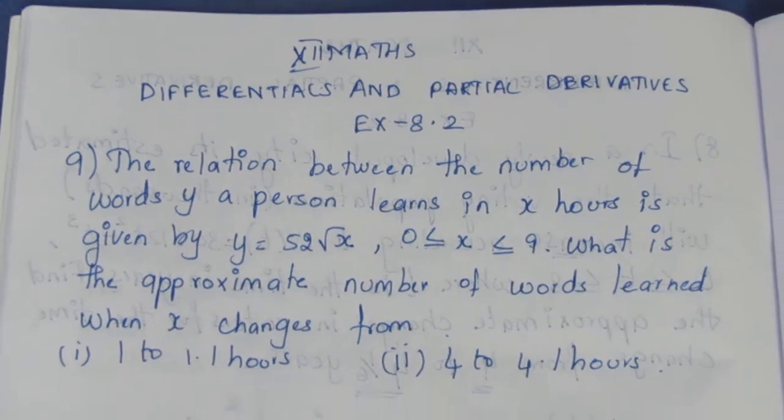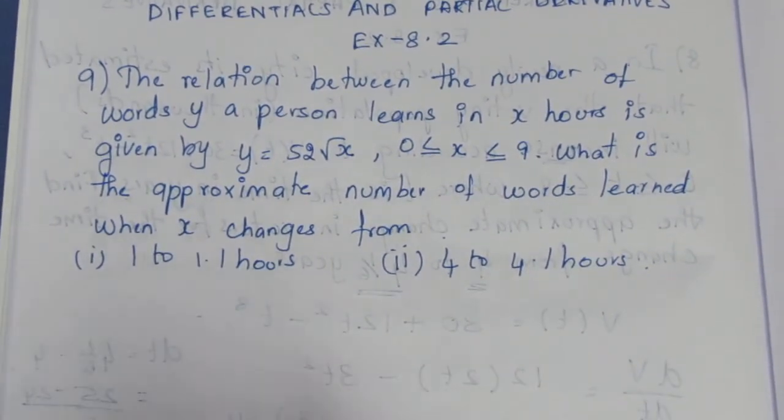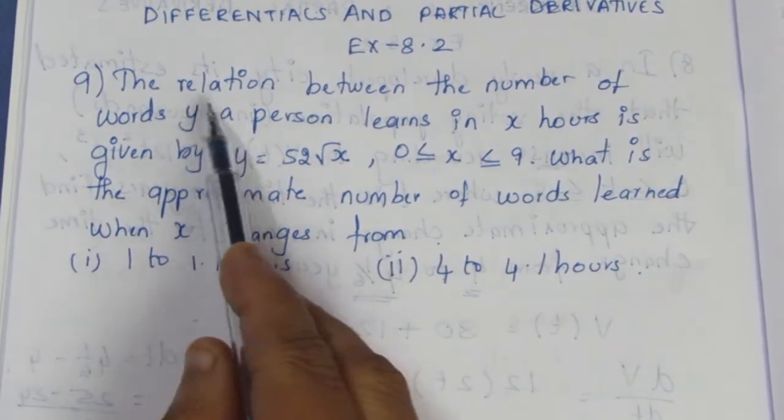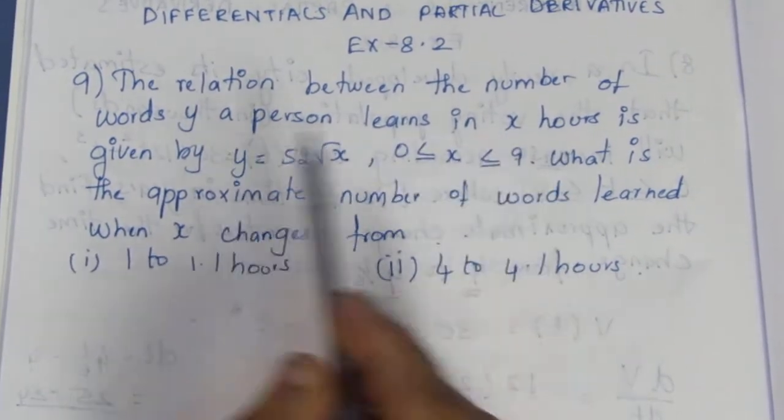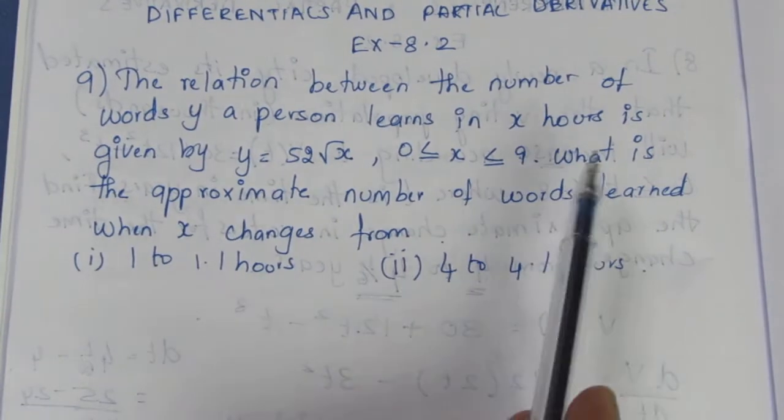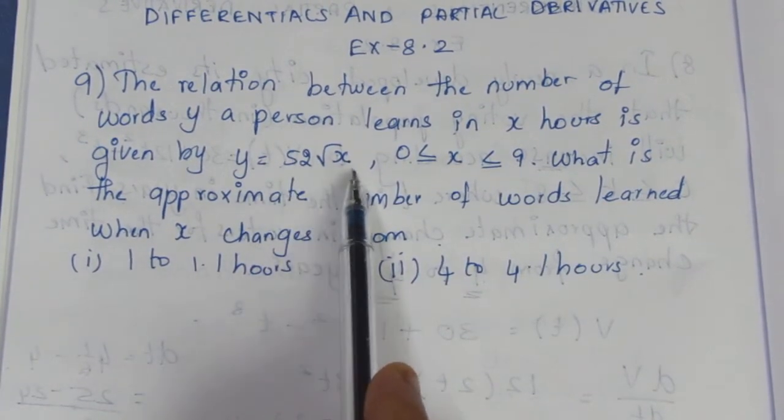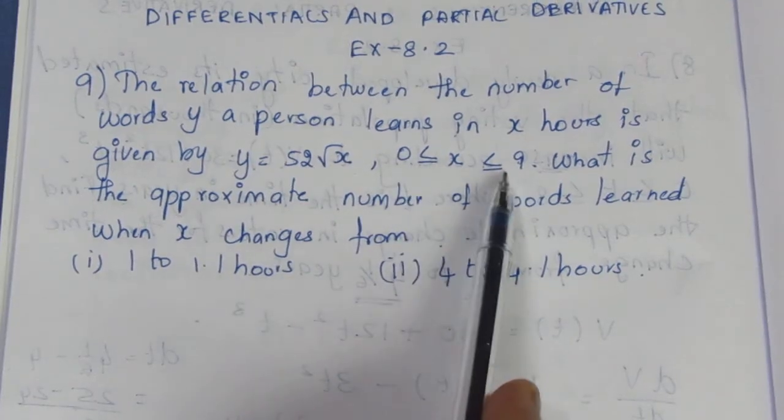The relation between the number of words y a person learns in x hours is given by y = 52√x, and x lies between 0 and 9.